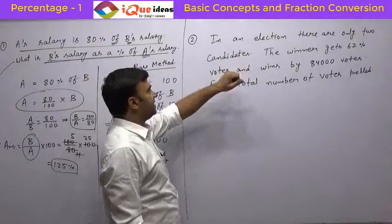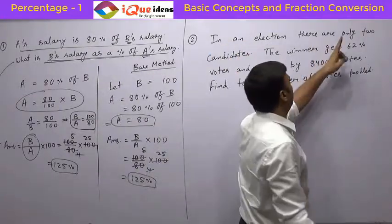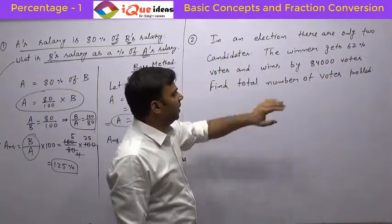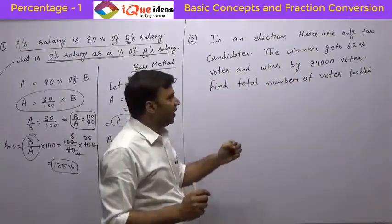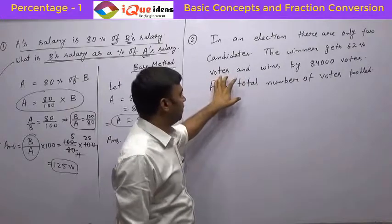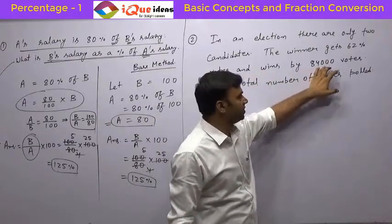Now, let's look at this question. It says in an election, there are only two candidates, the winner gets 62% of the votes and wins by 84,000 votes.